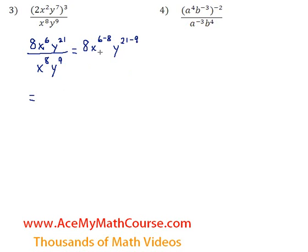Since every time we are dividing the same base, we subtract the exponents. So here we have 8x to the power of negative 2, because 6 minus 8 is negative 2, times y to the power of 12, because 21 minus 9 is 12.